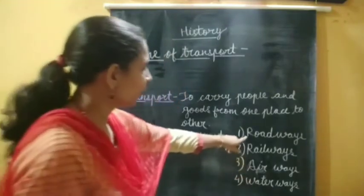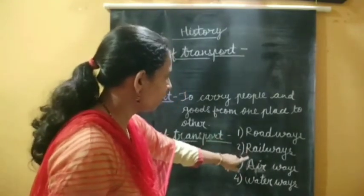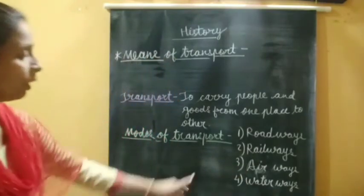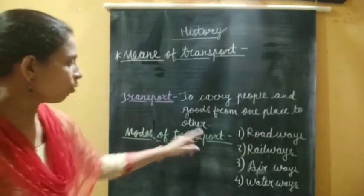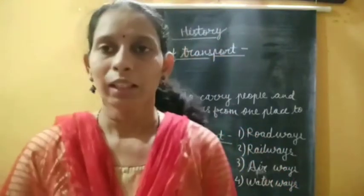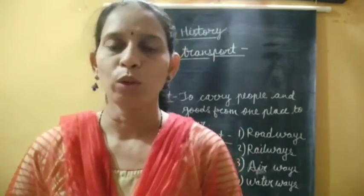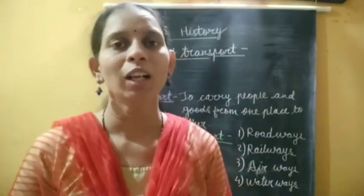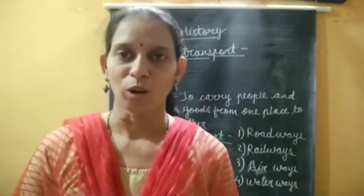So again, these four — roadways, railways, airways, and waterways — these are the four modes of transport. Now we will learn about transport and see these four modes. Let's watch a video where we will see all these things.